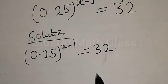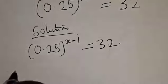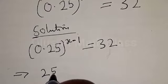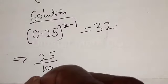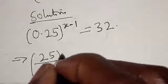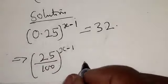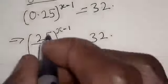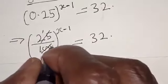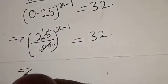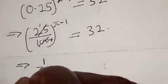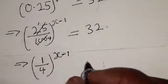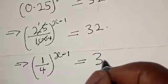This may look very simple but you'll discover that a lot of people might still miss it. So 0.25 can be expressed as 25 over 100, all raised to power s minus 1, equal to 32. Simplifying 25 over 100, this implies that we have 1 over 4 all raised to power s minus 1 equal to 32.